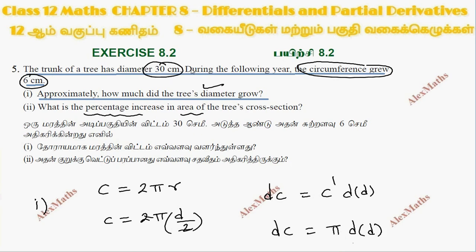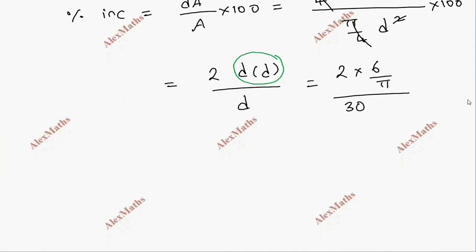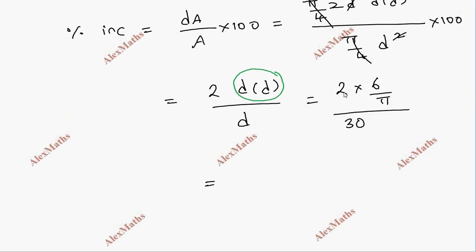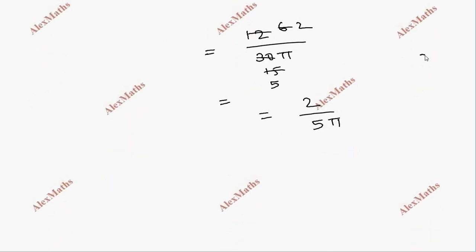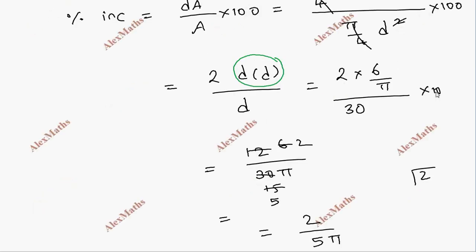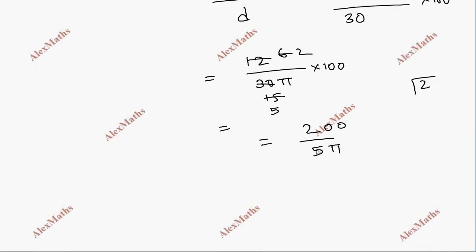The trunk of a tree has a diameter of 30 cm, so we substitute d equals 30. The percentage increase is 2 times 6 by π divided by 30, into 100. Simplifying: 12 divided by 30π times 100 equals 2 divided by 5π times 100, giving 200 divided by 5π, which equals 40 divided by π percent.